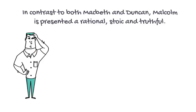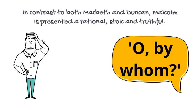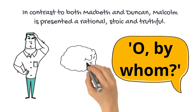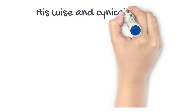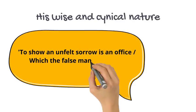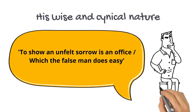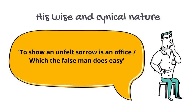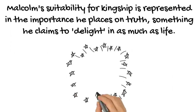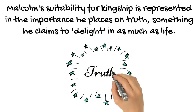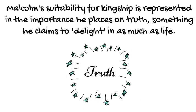Finally, Malcolm is presented as rational, stoic and truthful. The curt response to his father's death — 'O, by whom?' — can be seen as an example of his exemplary stoicism, in contrast to the false hyperbolic responses of Macbeth and Lady Macbeth. Malcolm's warning that 'to show an unfelt sorrow is an office which the false man does easy' represents his wise and cynical nature. This is further represented in his testing of Macduff, which arguably presents him as more suitable for kingship than his trusting father. Furthermore, Malcolm's suitability for kingship is represented in the importance he places on truth, something he claims to delight in as much as life.